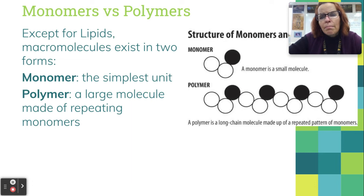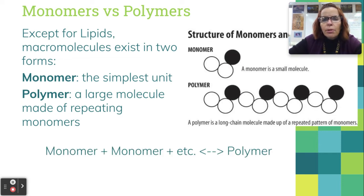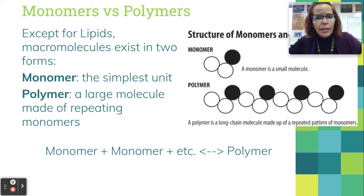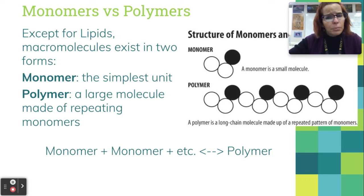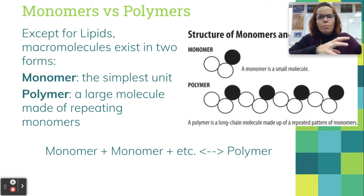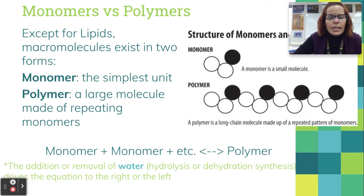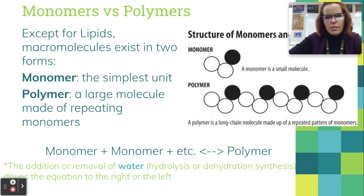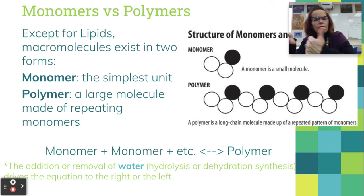The monomer of a protein is an amino acid. The general formula is: monomer plus monomer — and so on, because it could be thousands of monomers put together depending on what you're building. For a protein, it's going to be hundreds or thousands of monomers to make your polymer. What I especially want you to notice is that the arrow is reversible — so you can either be building in complexity or pulling the complexity apart. The addition or removal of water, called hydrolysis or dehydration synthesis, drives the equation in either direction.